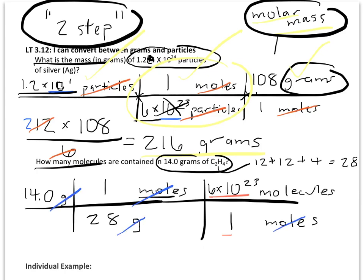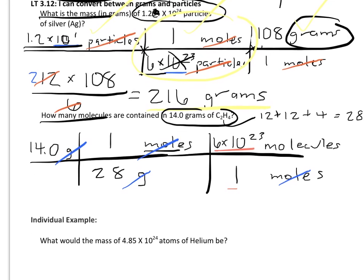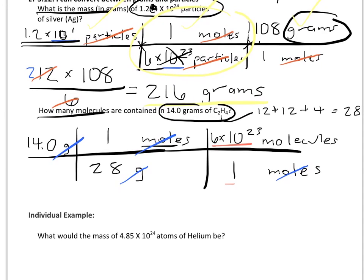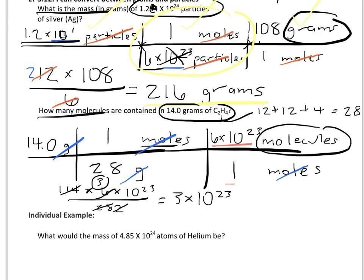We can cross off our units of grams and moles, and we can rewrite this underneath. So, we know that if we have 14 times 6 times 10 to the 23rd, all over 28, we can see pretty clearly that 14 over 28 is 1 over 2. And then 6 over 2, we could just rewrite as 3. So, we have 3 times 10 to the 23rd, and do not forget about our units, which in this example is molecules.